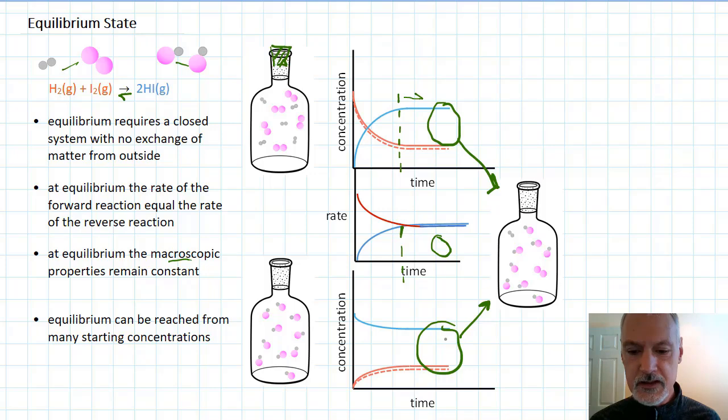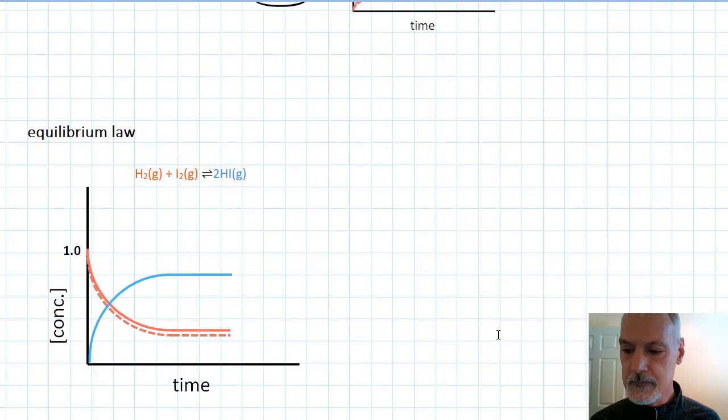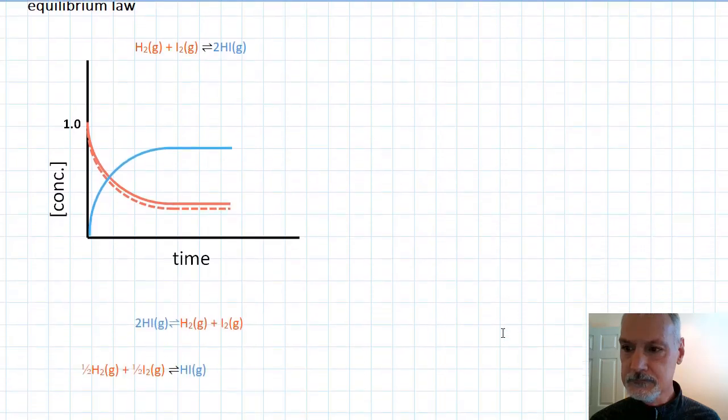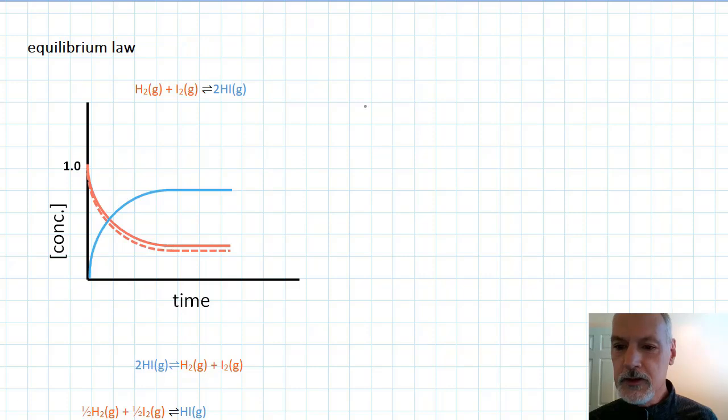Let's look a little bit more closely now at these concentrations at equilibrium. The equilibrium law states that once you've reached equilibrium, so again, I'm talking about the situation when we're here and beyond, there's a certain ratio that exists between products and reactants. We call this the equilibrium law.